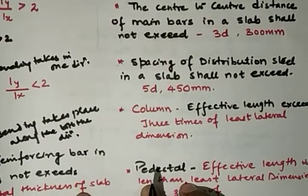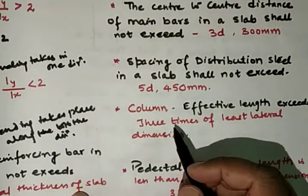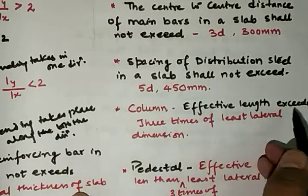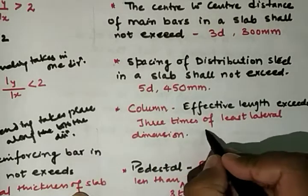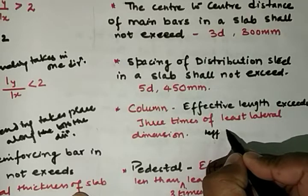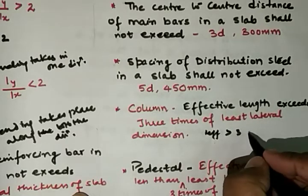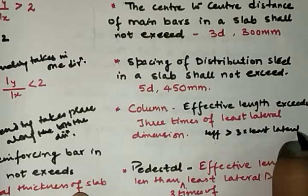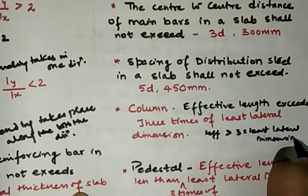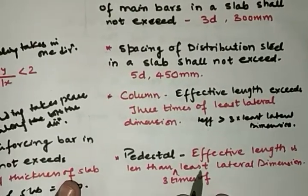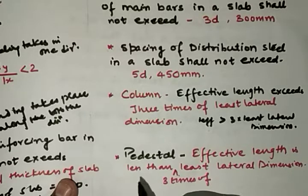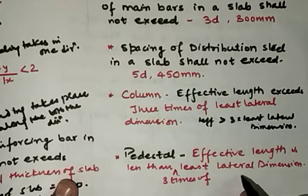Next is the column. A column is a vertical compression member which is mainly subjected to axial load, and whose effective length exceeds 3 times the least lateral dimension. Next is the pedestal. A pedestal is also a compression member, but its effective length is less than 3 times the least lateral dimension.